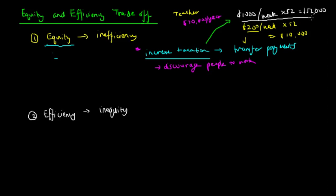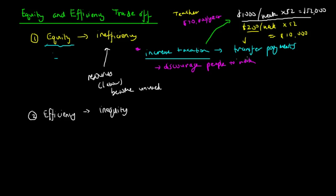This is a cause of inefficiency because resources, especially labor, become unused. Those on the fringe of entering the workforce would choose not to work because it's easier to live off high transfer payments. Additionally, with an increase in taxation, this would further discourage people to work because they're getting taxed more out of their hard work, leaving them with less disposable income, and therefore they choose not to work and rather live off transfer payments. So when the government chooses to promote equity, that comes at the cost of efficiency.